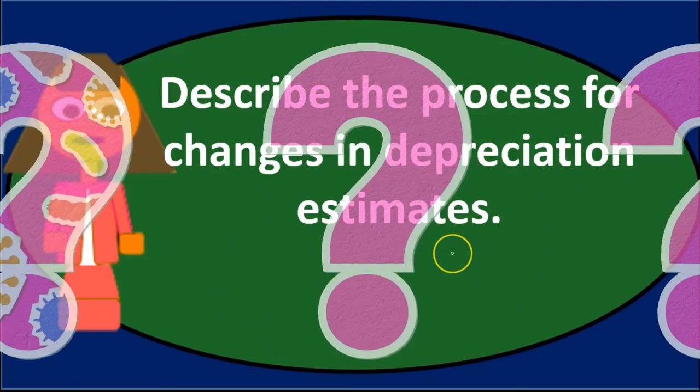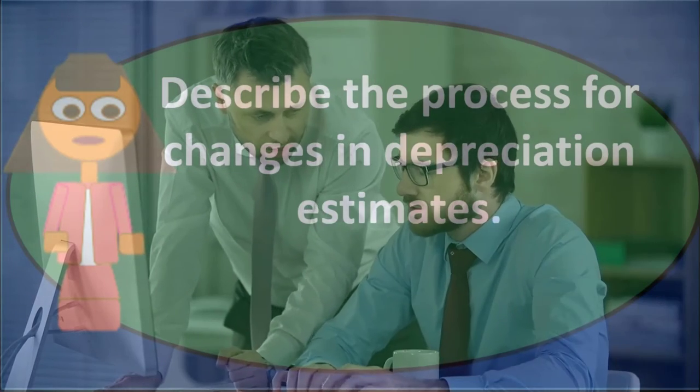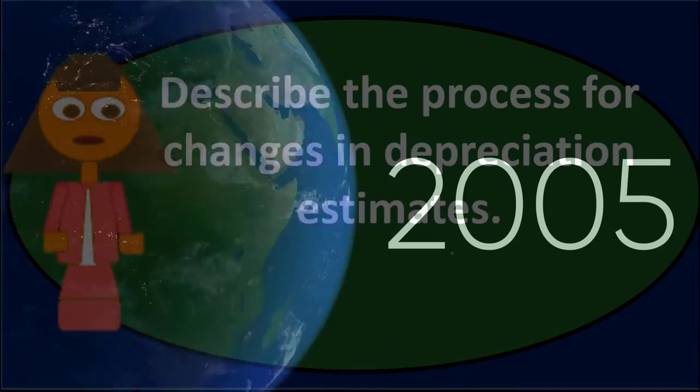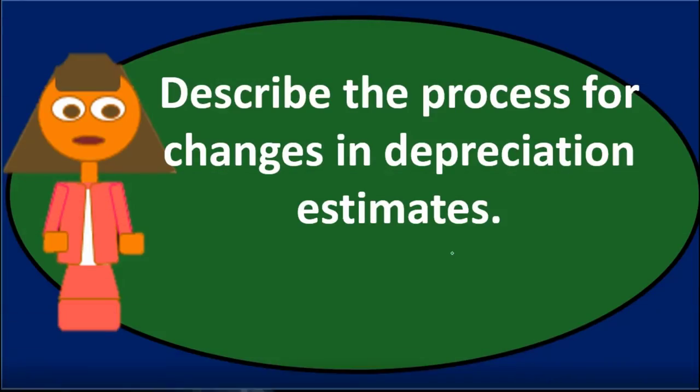Then the question is, what if there's a change in estimate? What does that mean? If we already made the estimate in year one for a five-year property, at some point in the future we may find our estimate is wrong. In year three, we might find it's totally obsolete, or we might find it has an extended life and will last longer than five years.